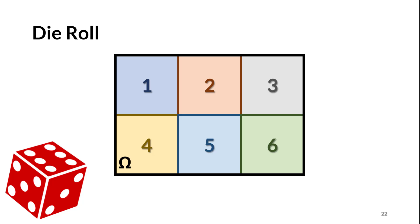If this is a fair die and the outcomes are equiprobable, what is the probability of rolling a 1? It's 1/6, because the sum of the probabilities of events in a partition is 1, and since they all have the same probability, it must be equally spread among the 6 outcomes. We also know that the probability of rolling a 3 or a 5 equals the probability of rolling a 3 plus the probability of rolling a 5, which equals 1/3, because we have two mutually exclusive events.